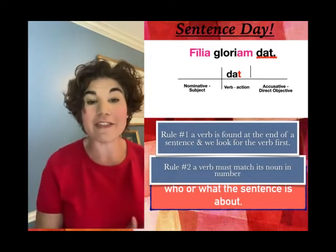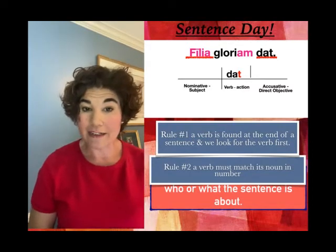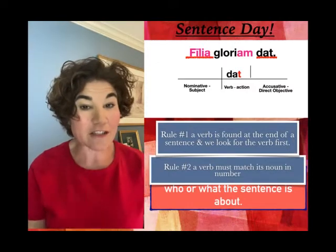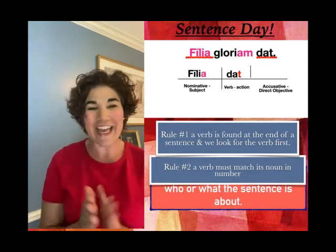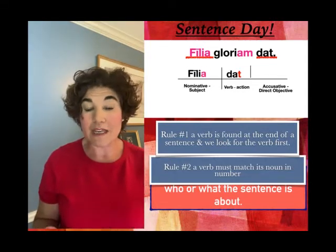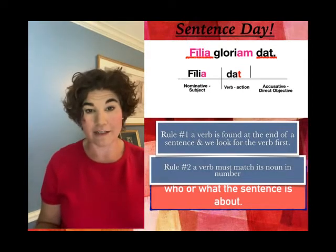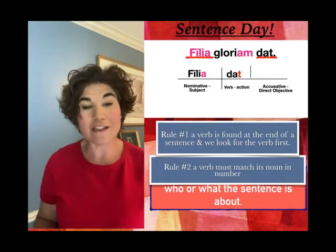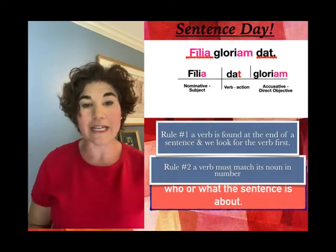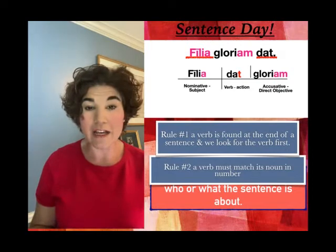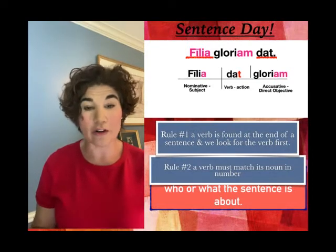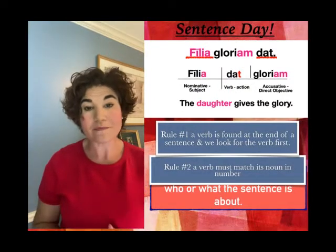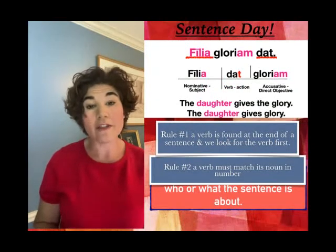Let's look at the beginning of this sentence: philia. Is it nominative? Yes. Is it singular? Yes. Does it match the verb in number? Yes. So it gets to go on the line. Philia is our nominative subject, dat is our verb. We only have one word left — gloriam — and we're going to fly that into the accusative. So philia dat gloriam means 'the daughter gives the glory' or 'the daughter gives glory.'